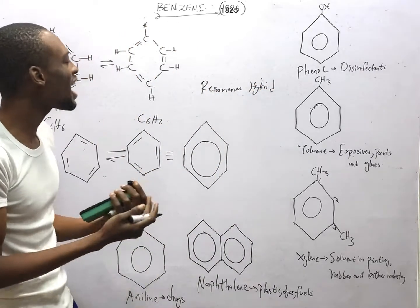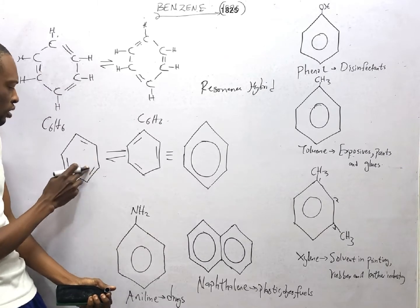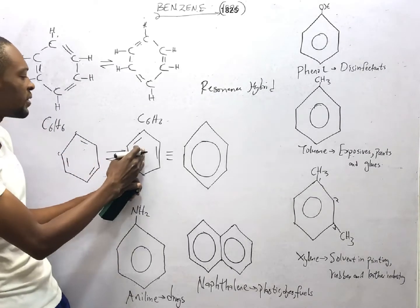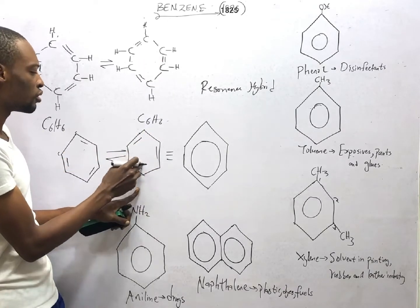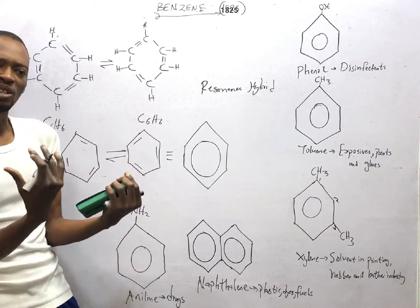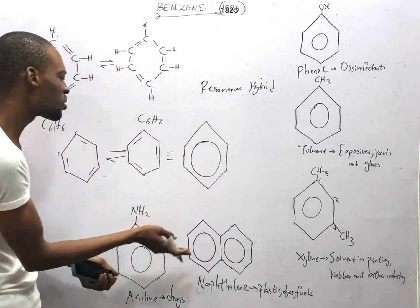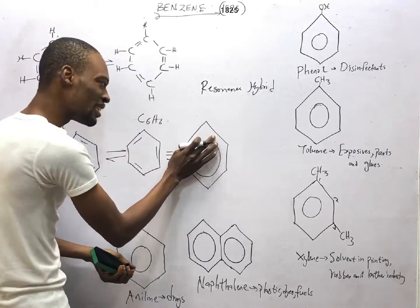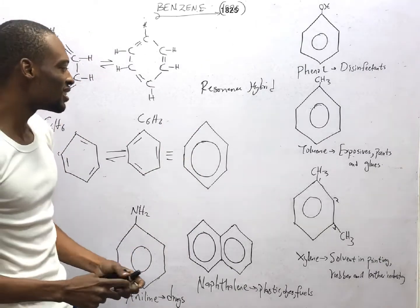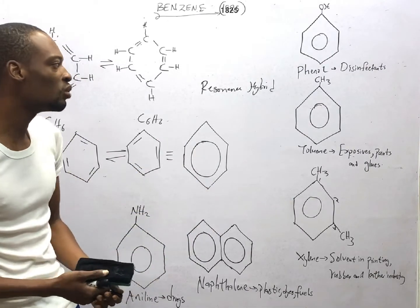The resonance hybrid of benzene — looking at the structure, double bond, single bond, double bond, single bond, double bond: the corners are carbon with hydrogen attached. Since benzene can exist in both forms, the most appropriate structure is in between these two. We use a hexagon with a circle inside to represent benzene, showing that the double bonds can be anywhere. This is the resonance structure of benzene proposed by August Kekulé.